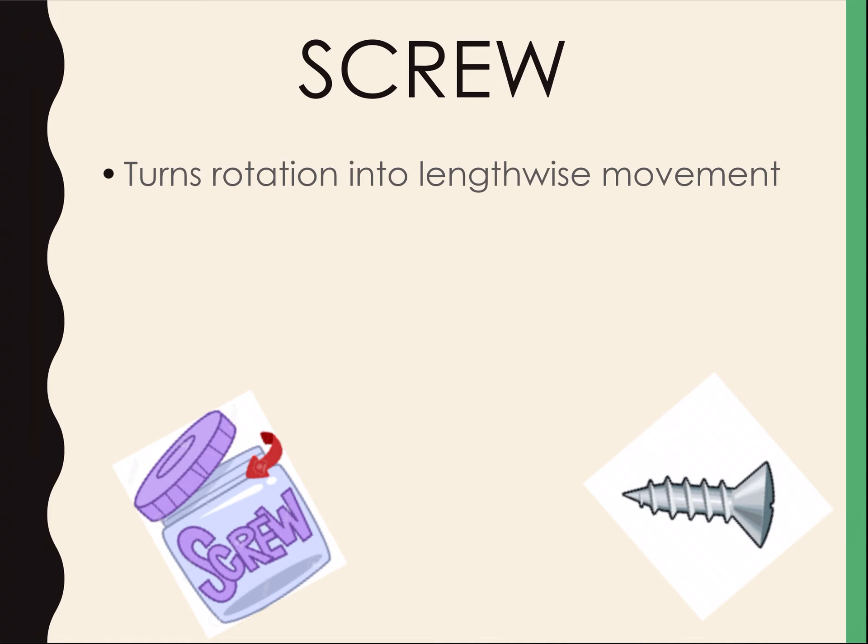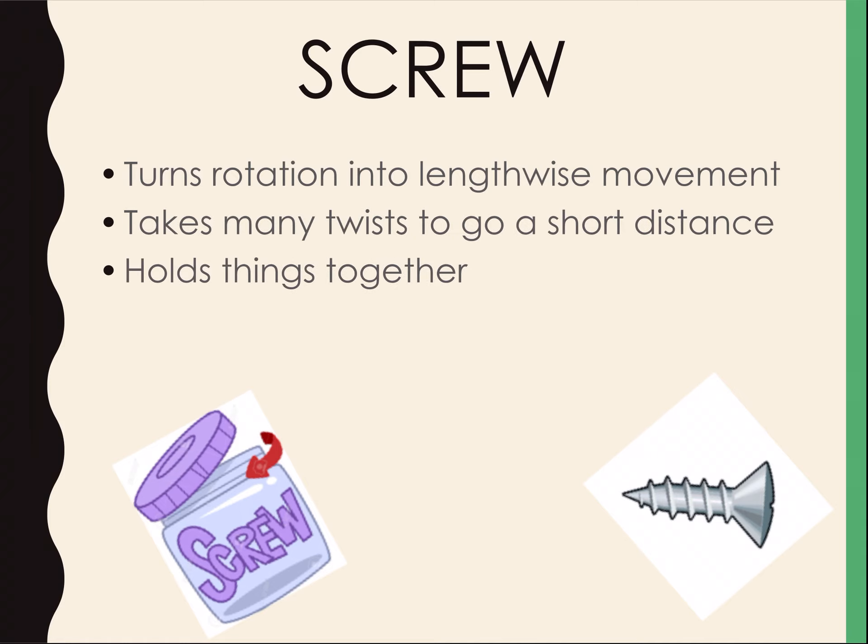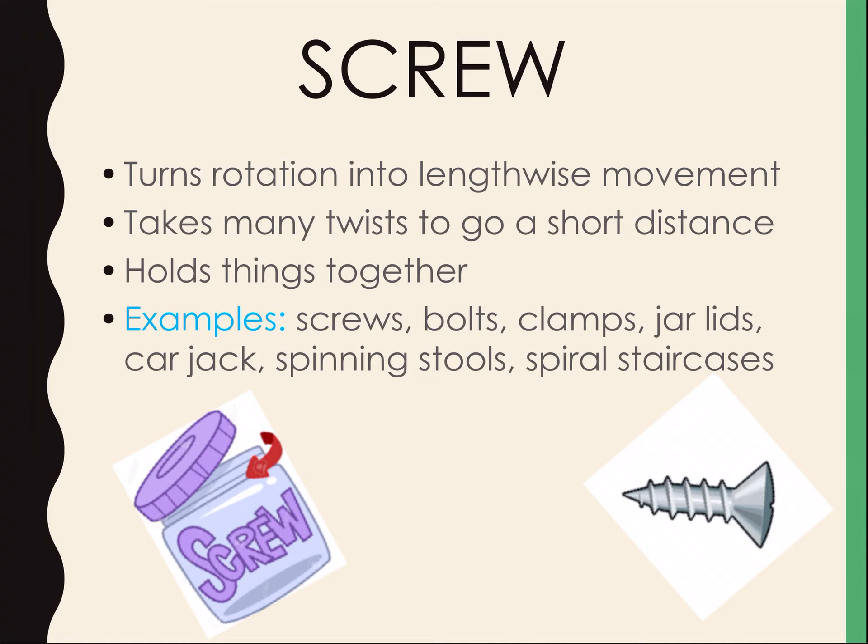Then we have our screw. A screw turns rotation into lengthwise movement. It takes many twists to go a short distance, but it holds things together very well. Some examples would be screws, clamps, and jar lids — these all hold things together.